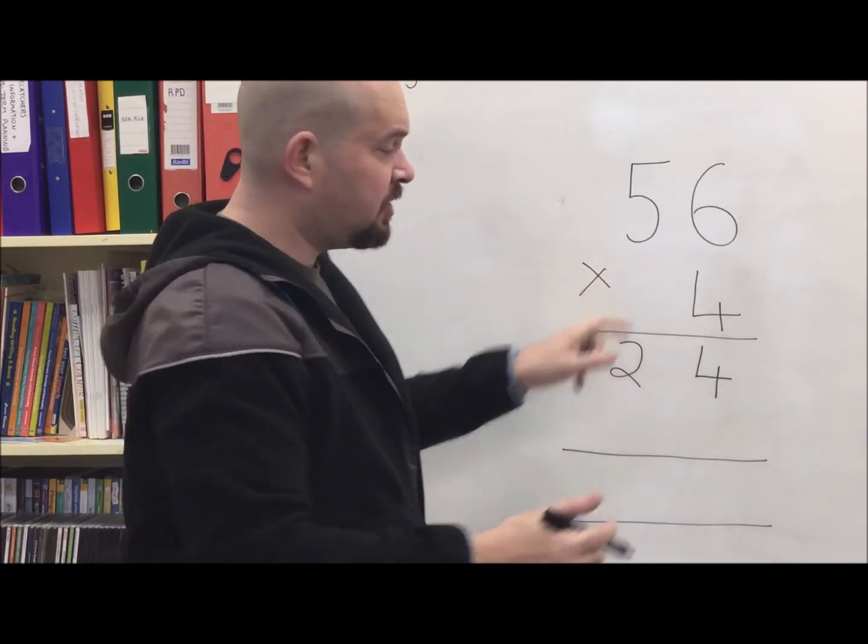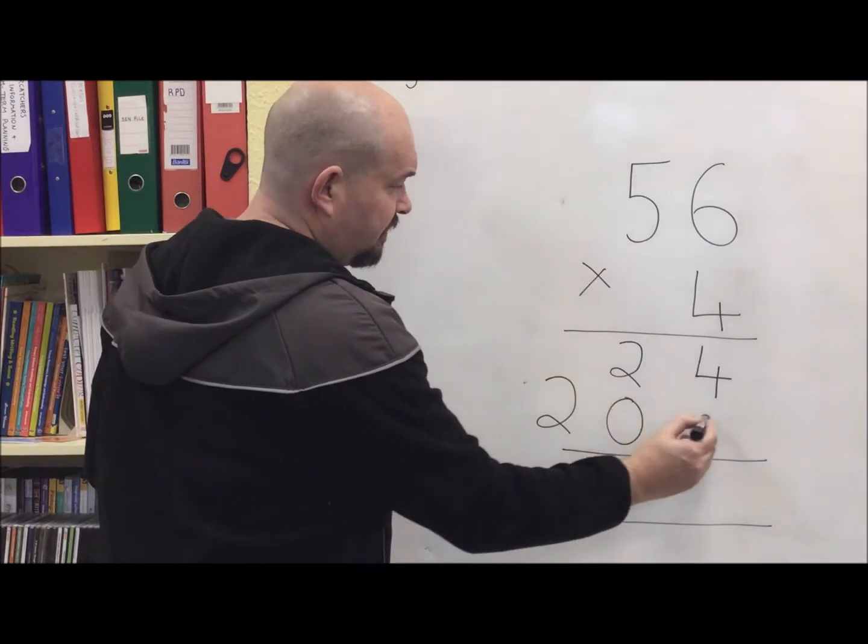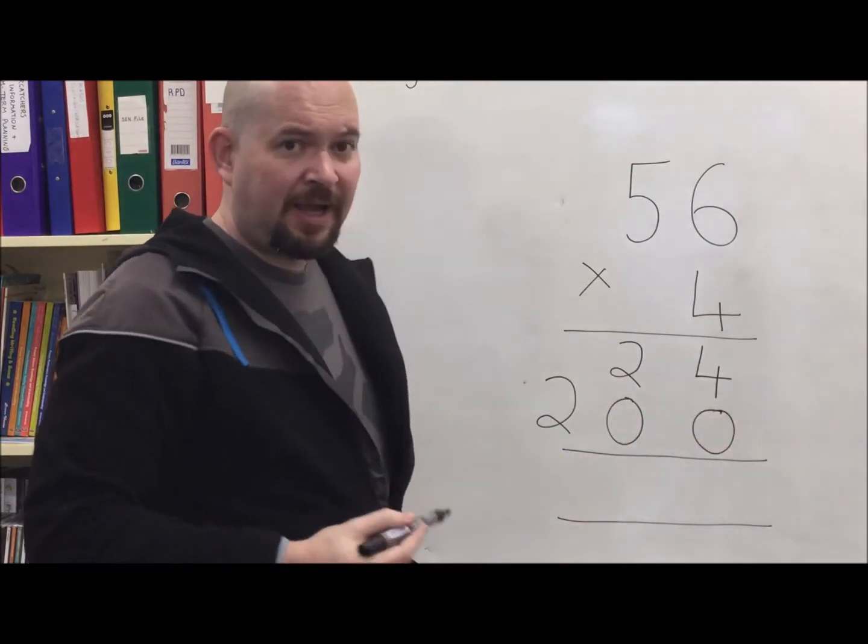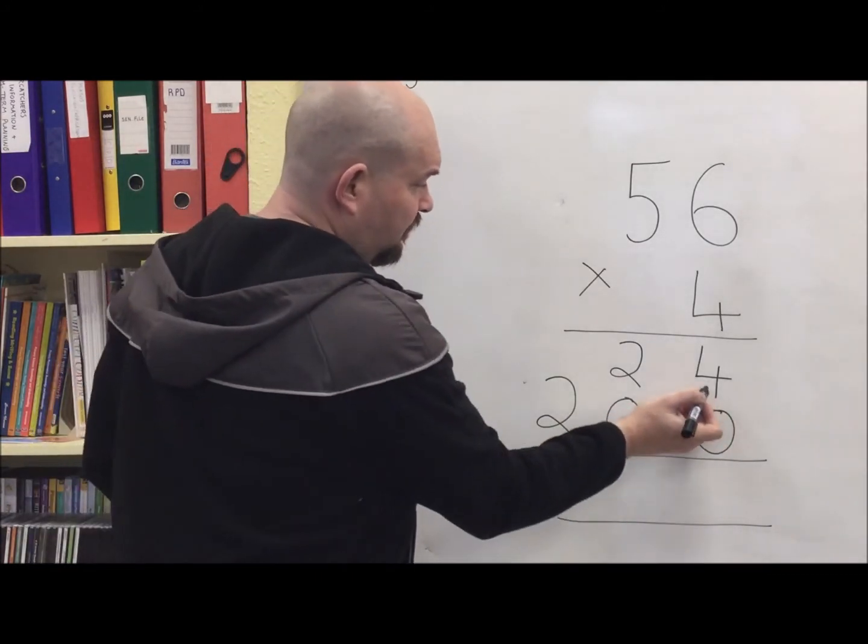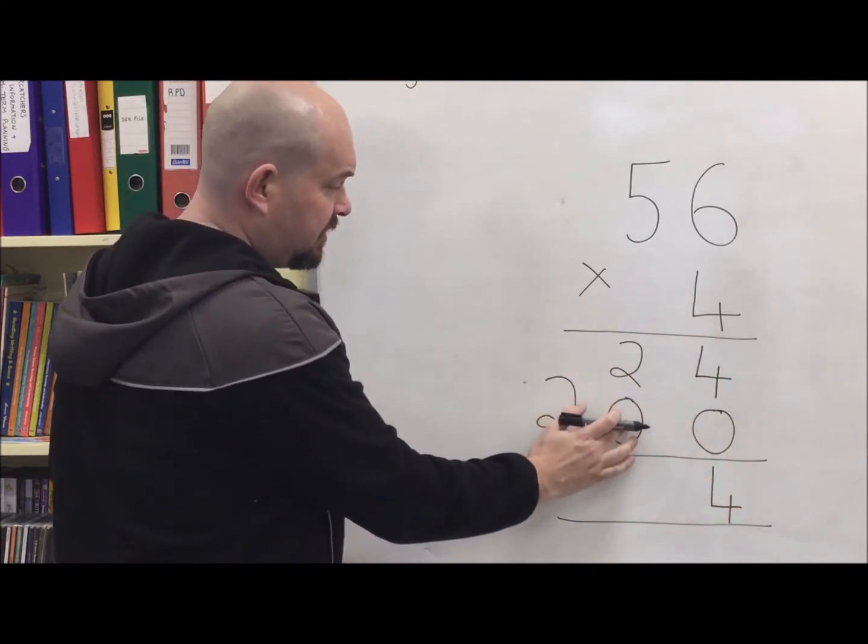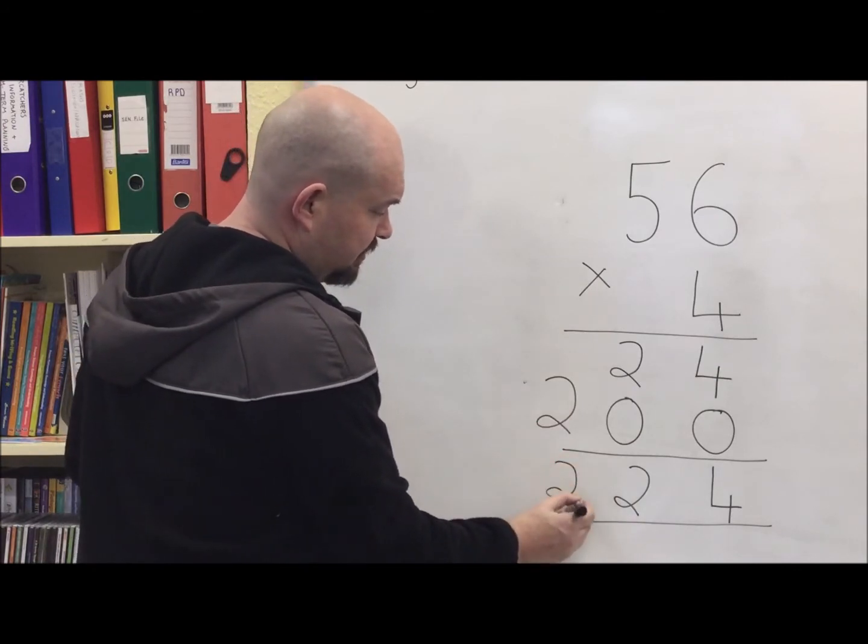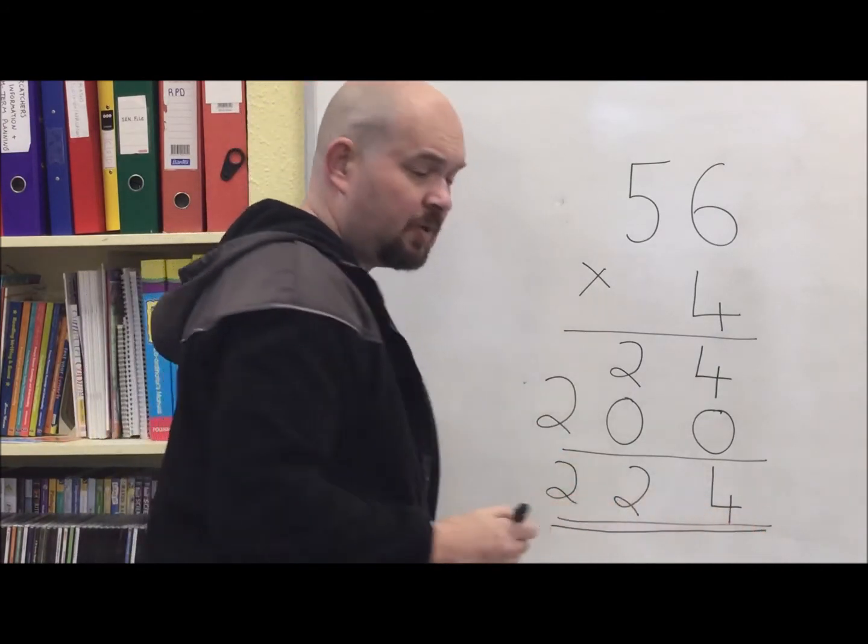So that would be 200. So 2 in hundreds, 0, 0. Add it all together at the end again. 4 and nothing makes 4. 2 and nothing, 2. 2 and nothing again. 2, answer 224.